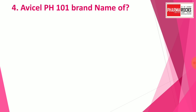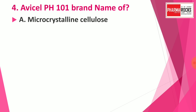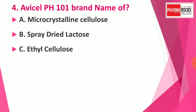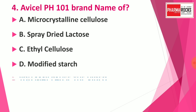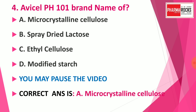Question number four: Avicel PH 101 is the brand name of — Option A: microcrystalline cellulose, Option B: spray-dried lactose, Option C: ethyl cellulose, Option D: modified starch. You may pause the video to note down the correct answer. The correct answer is Option A: microcrystalline cellulose. MCC is also known as Avicel PH 101.